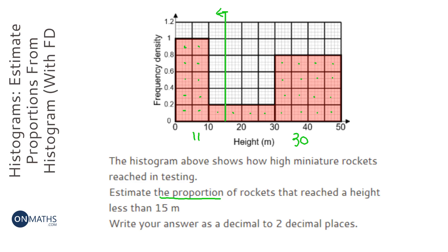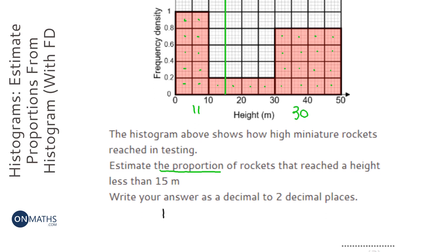So as a fraction that will be 11 over 30. But it's asked for a decimal so I can just type that into my calculator. Or if you know anything about decimals you could convert that into 33 over 90 and then work from there. 0.366 repeating. So to two decimal places that's 0.37.